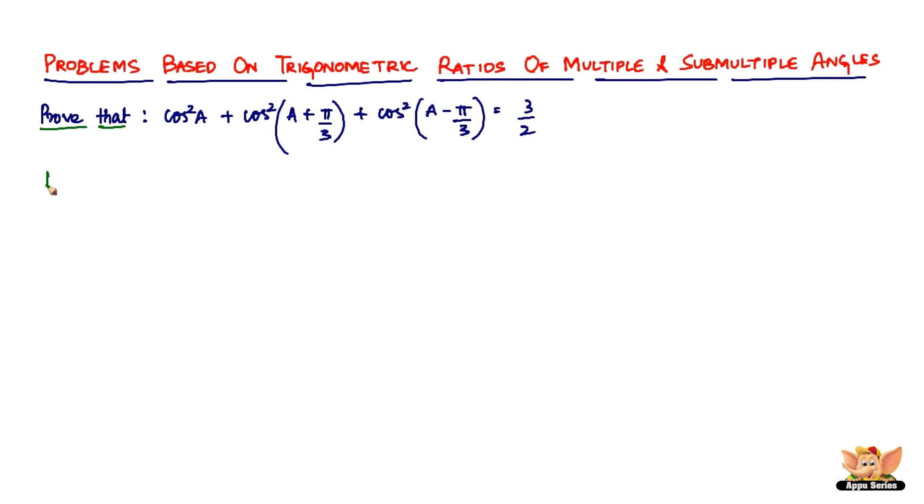Let's just take the left-hand side, LHS equals: multiply and divide by 2 - that doesn't change anything. So 1/2 times [2cos²a + 2cos²(a + π/3) + 2cos²(a - π/3)]. You'll know why I'm doing this.